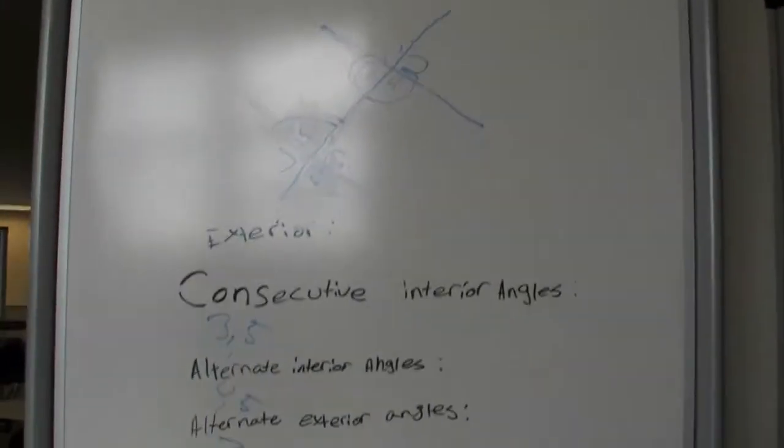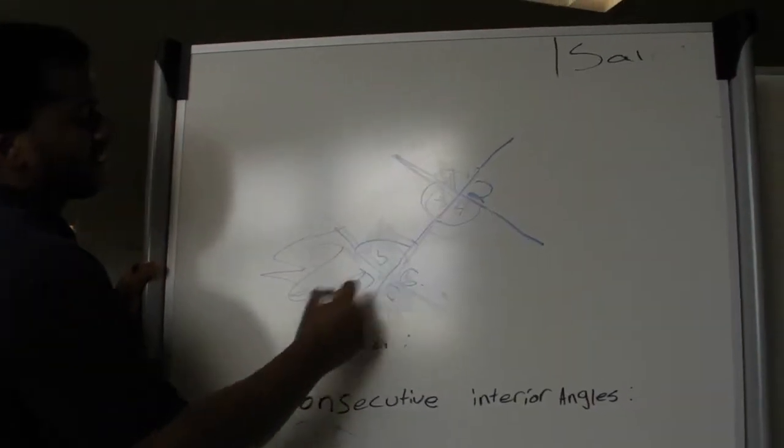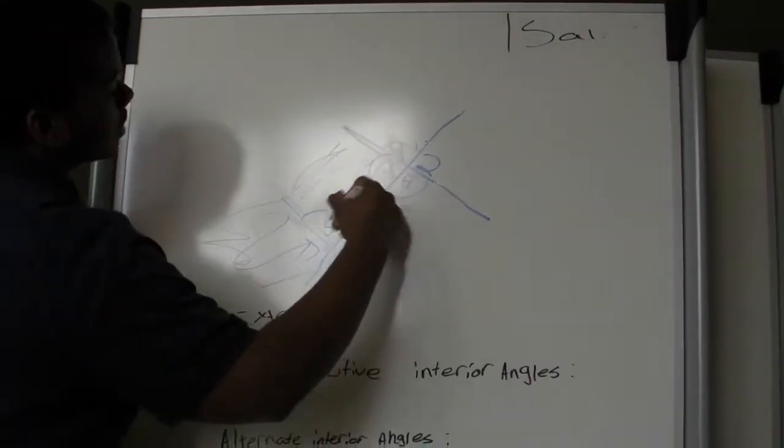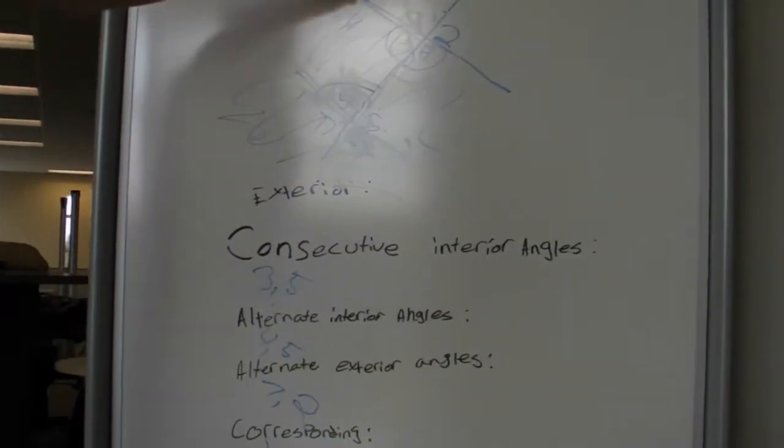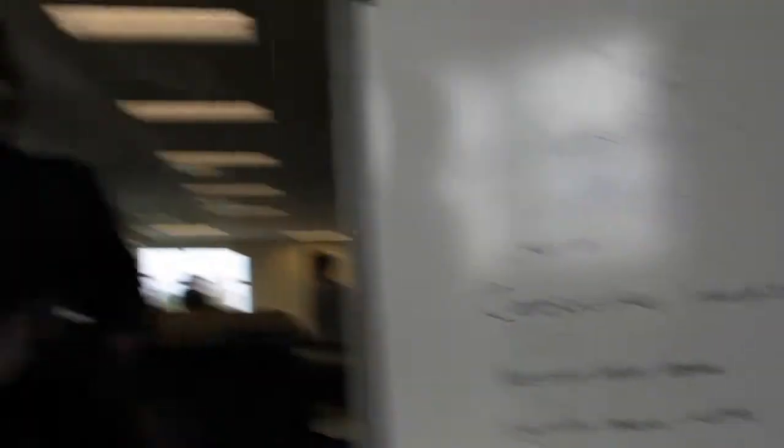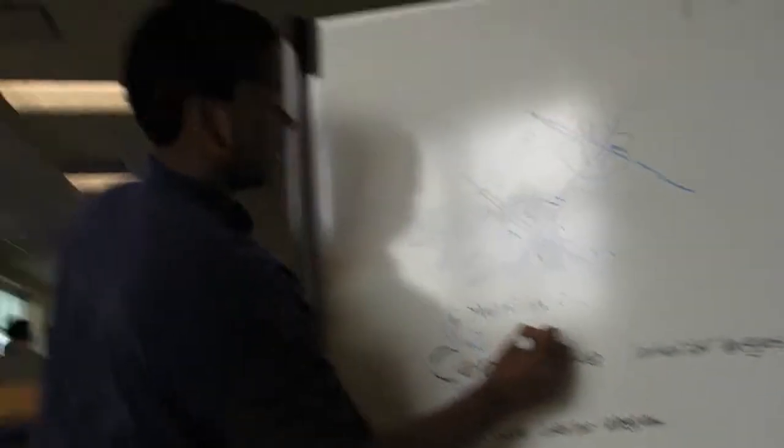But you still need interior and exterior angles. The exterior is this area. The interior would be this area. So angles such as seven, eight, one, and two are exterior angles. Oh, this makes sense now.